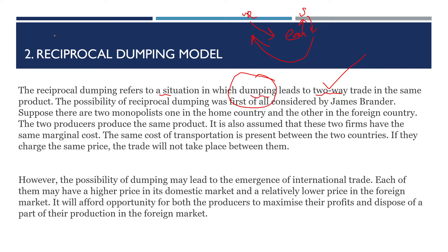This two-way trade on a particular product is what we call the reciprocal dumping model. The possibility of reciprocal dumping was first considered by James Brander. So the concept of reciprocal dumping is attributed to James Brander.